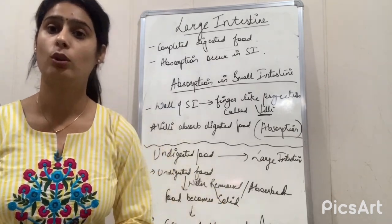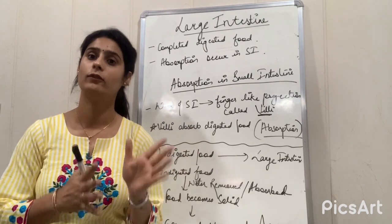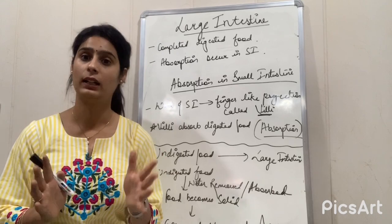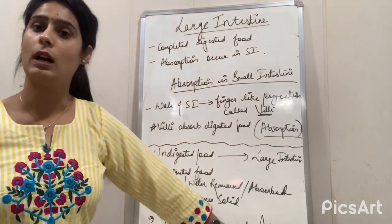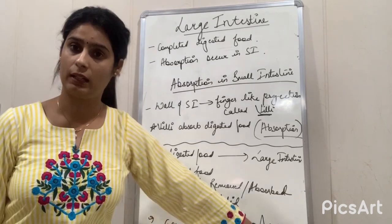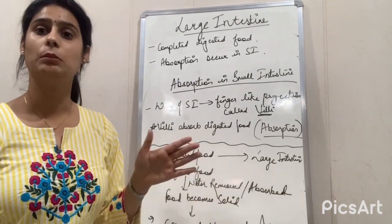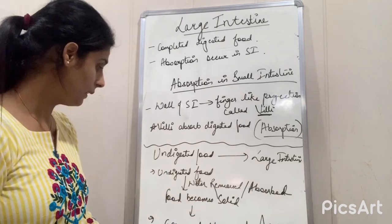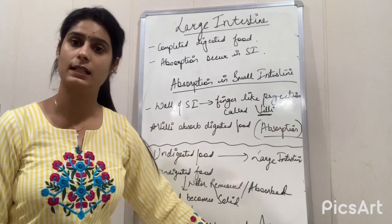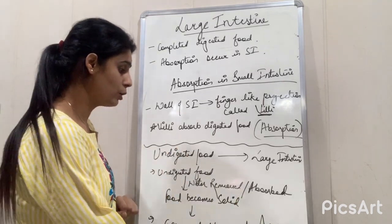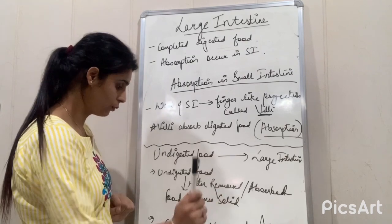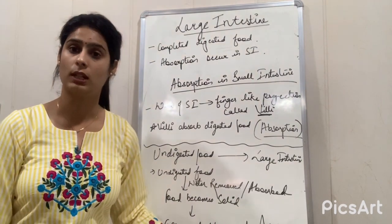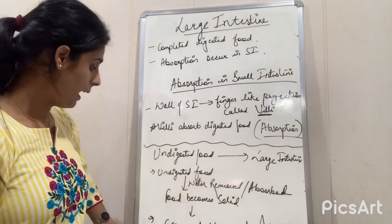Just as in the stomach there was a sphincter helping food move from stomach to small intestine, similarly there is another door here called the anal sphincter, which helps in the removal of solid undigested food from the body through the anus. This process of removal of undigested solid food through the anus via the anal sphincter is called egestion.